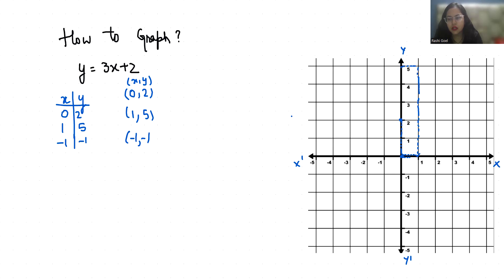So this is 1 comma 5. Minus 1 comma minus 1 lies here. These are our coordinates. Now let's join with the help of a line.